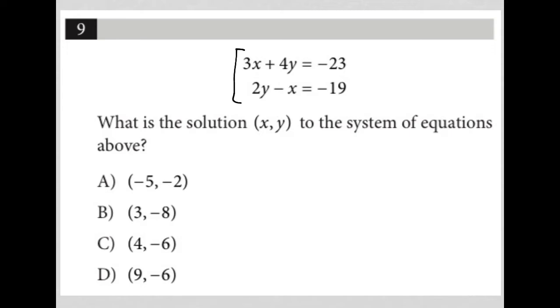Our first example is number nine from Test 1. Here's what a system of equations question looks like: you'll typically have two equations stacked on top of each other. In the first equation we have 3x + 4y = -23. The second equation is a little mixed up: 2y - x = -19. So I'm going to rewrite and rearrange the second equation so the x's and y's line up.